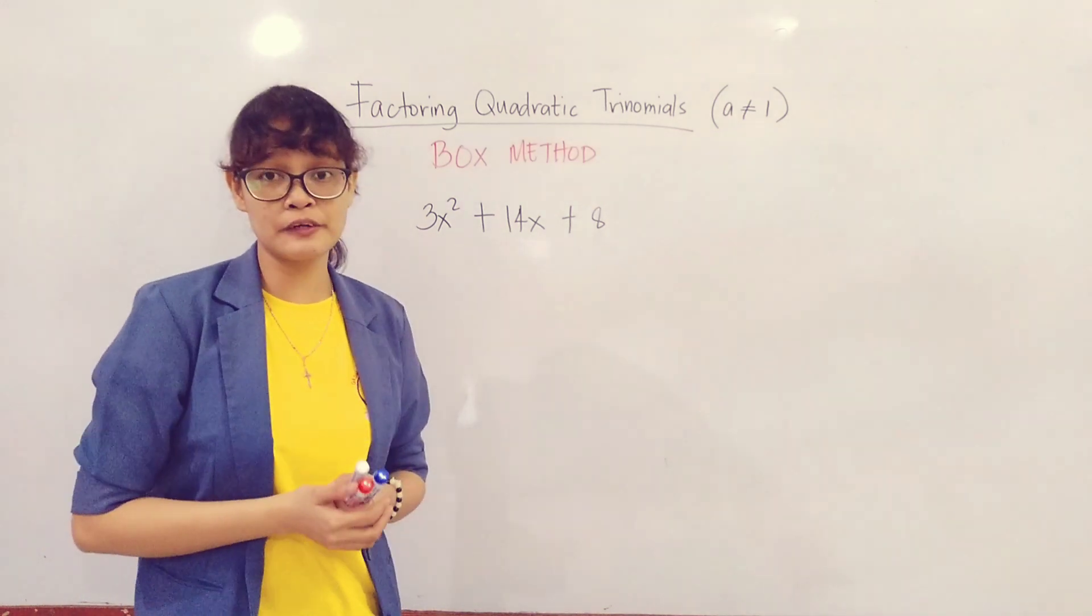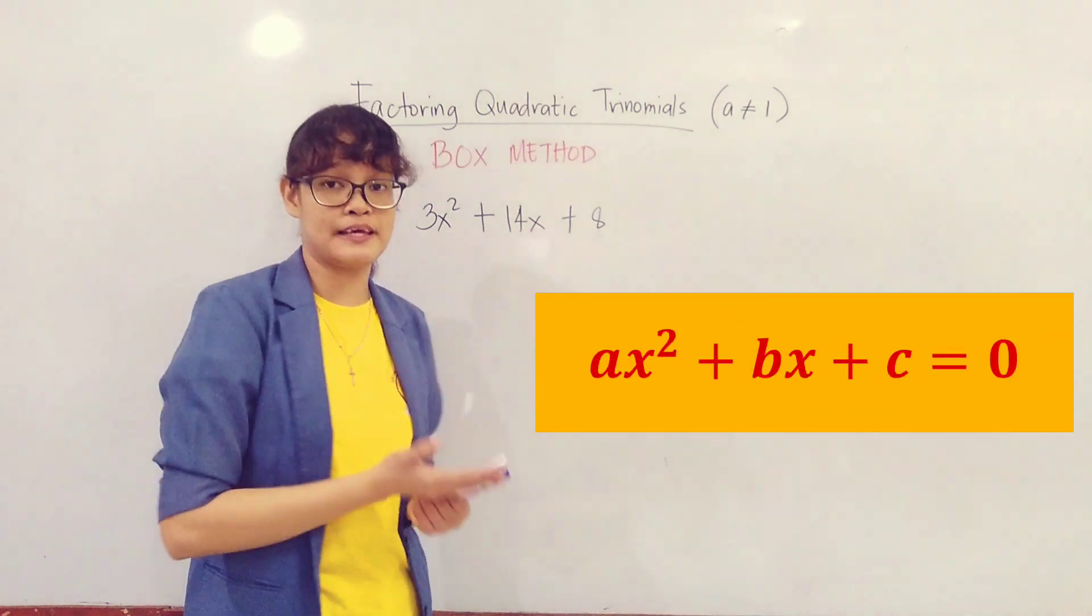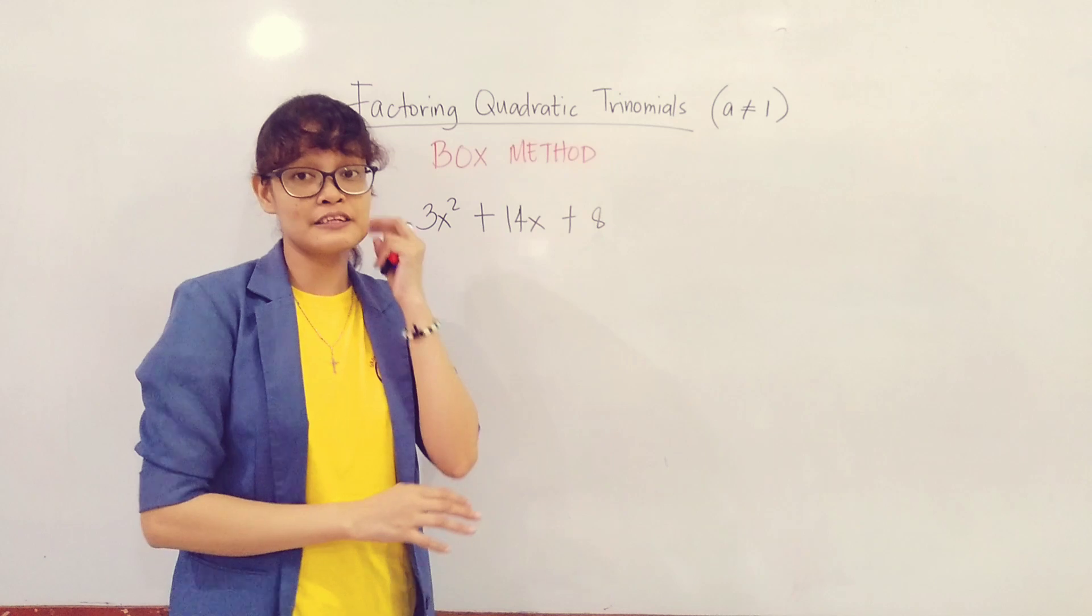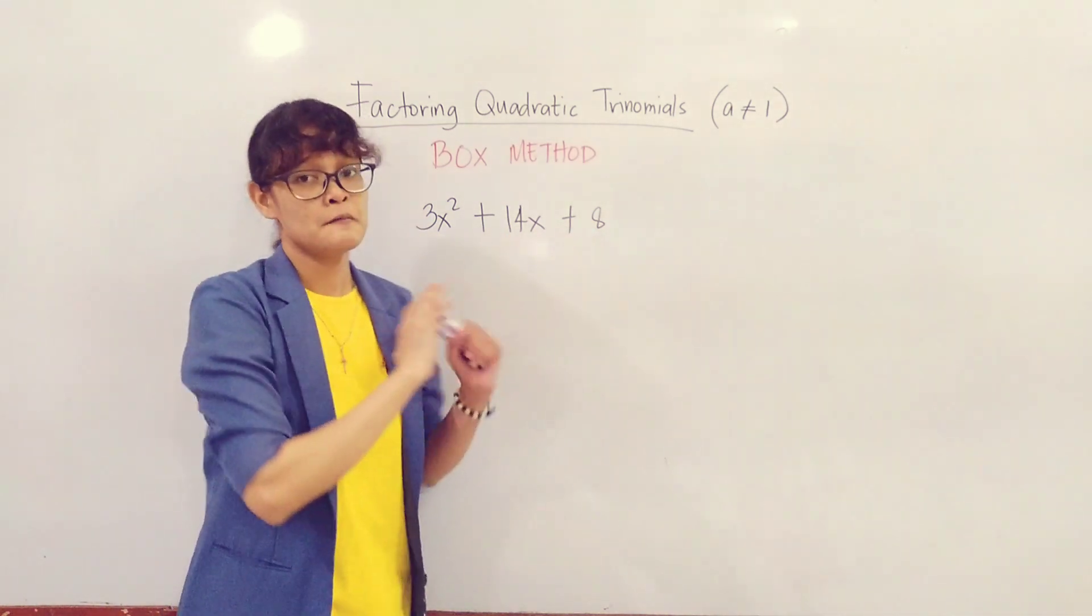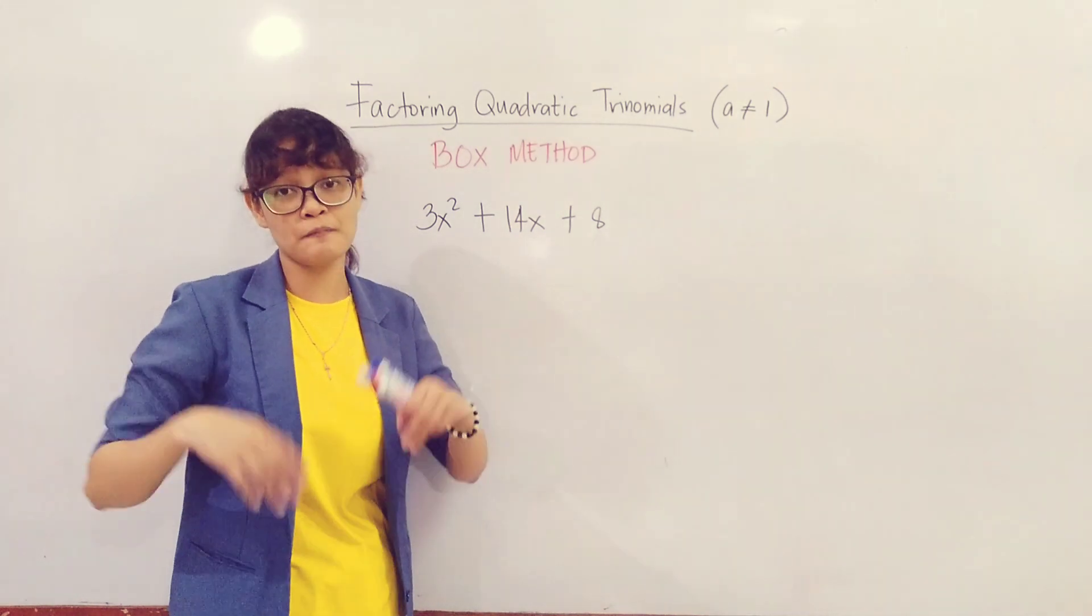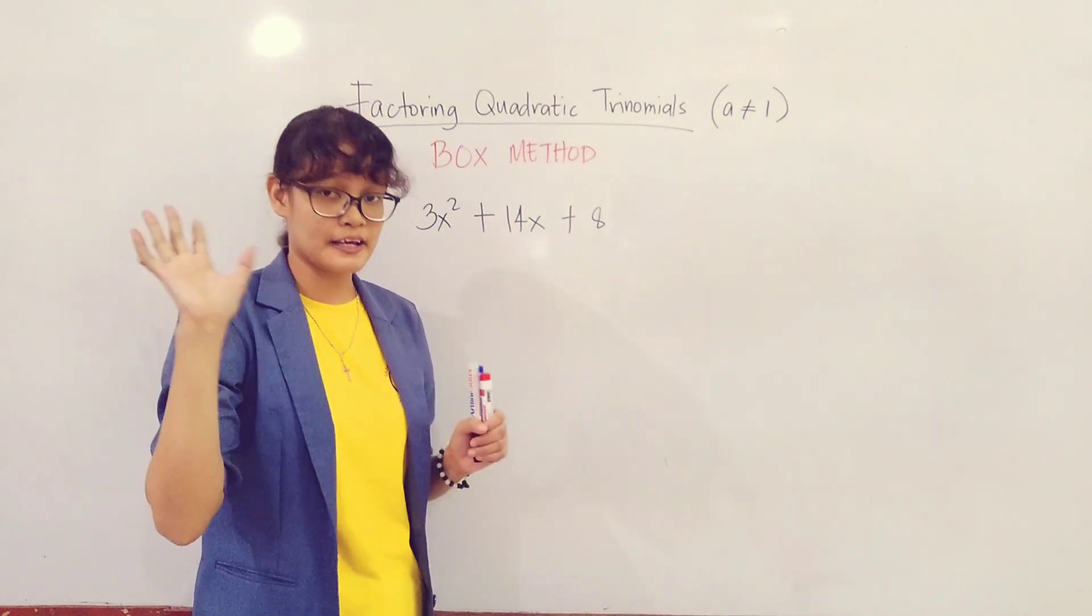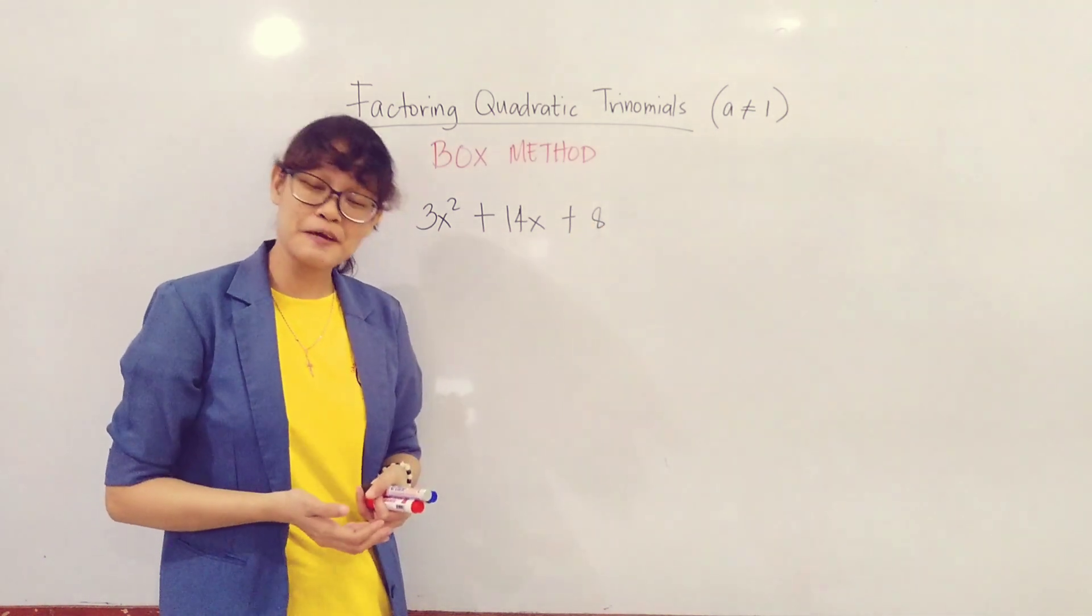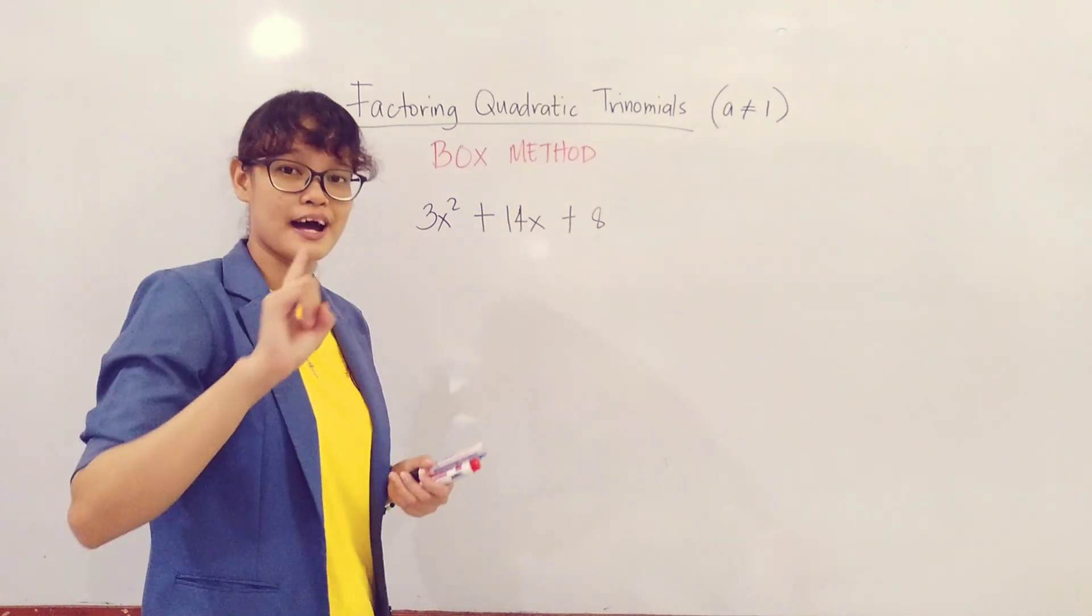So first, you need to make sure that the quadratic trinomial is in standard form: Ax² + Bx + C. Then, check if they have a greatest common factor. So far, you have 3, 14, and 8. They are all relatively prime to one another, which means the common factor is 1 only. So when it's in standard form, to start the box method, we need a box. So step 1, draw a box, 2 by 2.